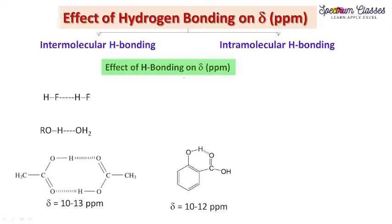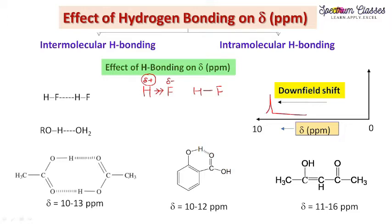Here we are interpreting how hydrogen bonding affects the chemical shift value. Consider HF molecules in intermolecular hydrogen bonding. The electronegative fluorine pulls electron density towards itself, acquiring partial negative charge, while hydrogen acquires partial positive charge. As hydrogen acquires partial positive charge, the electron density around this hydrogen decreases. As we discussed earlier, if we remove electron density around hydrogen, the proton will shift to the downfield side.